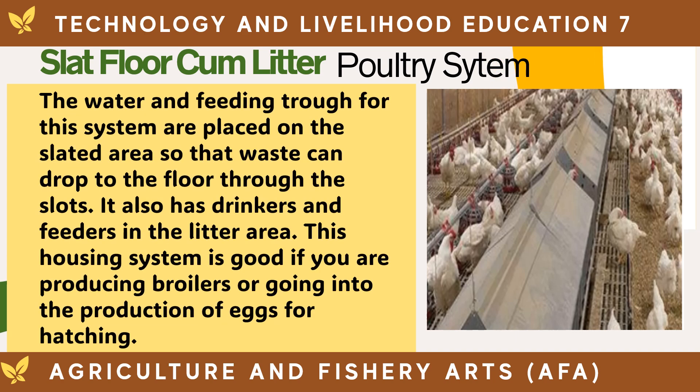The water and feeding trough for this system are placed on the slatted area so that waste can drop through the slots to the floor. It also has drinkers and feeders in the litter area. This housing system is good if you are producing broilers or going into the production of eggs for hatching.